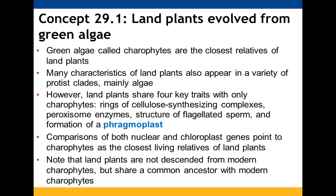Land plants share four traits with the charophytes: the rings of cellulose-synthesizing complexes, peroxisome enzymes, flagellated sperm, and a phragmoplast. Looking at their nuclear genes and chloroplast genes, the charophytes are the closest living relatives of land plants, but land plants are not descended from them — they just share a common ancestor.